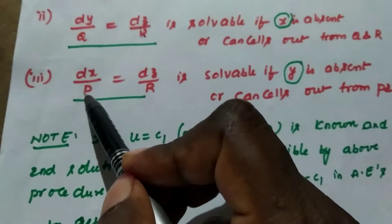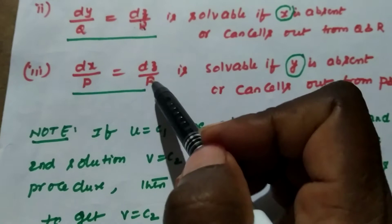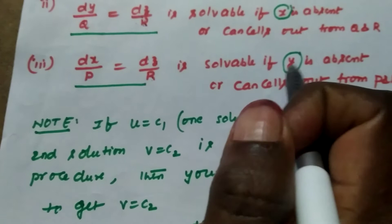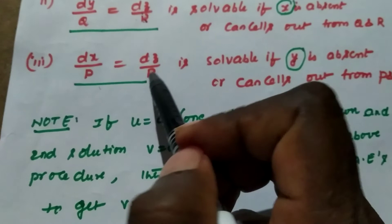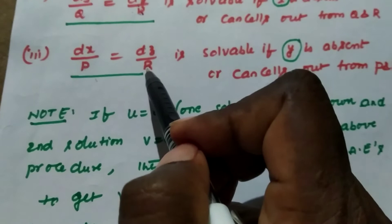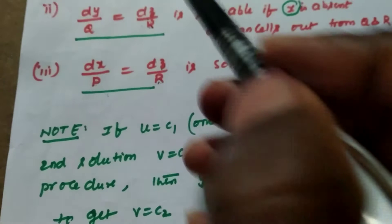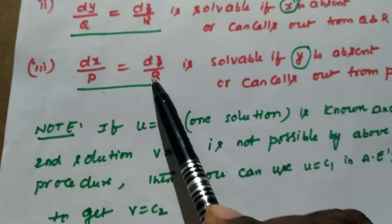These two fractions are solvable if the denominators p and r may contain x and z and do not contain y, or if p and r contain y but we are able to remove y from p and r. If we are not able to cancel out y from these two denominators, then we cannot find the solution from these two fractions.